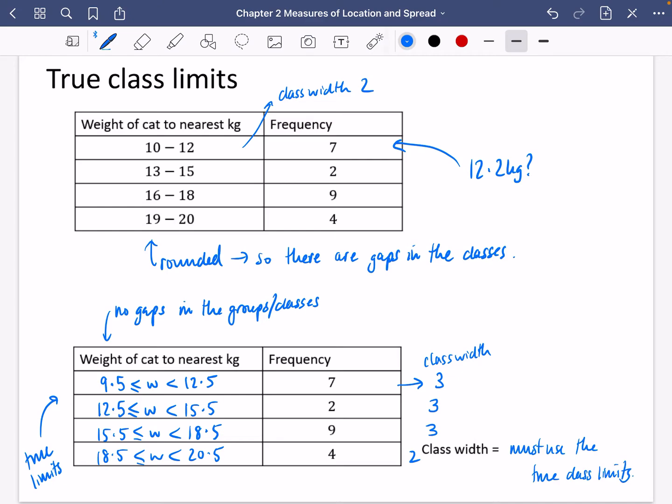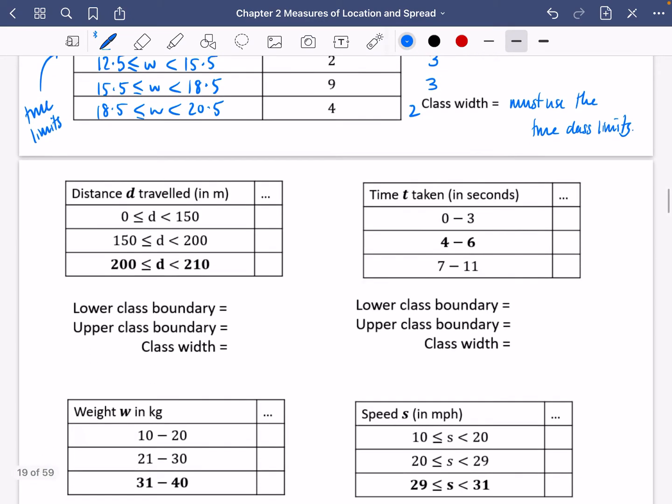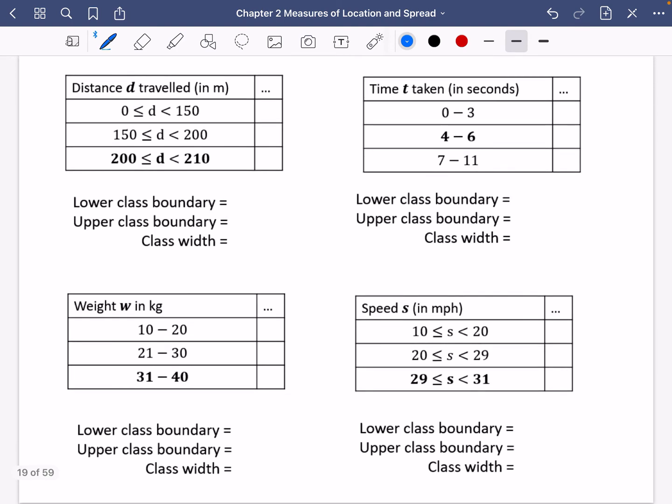Let's have a look at these true class limits with some examples that we've got here. So for the ones in bold, what I want you to do is to decide what is the true lower class boundary of this one that we've got? What is the upper class boundary? And what is the class width? Now, if they're presented in this kind of way, there's no gaps. So this is already in its true class limits form. We don't really need to do that much work. But there are a couple of them where I think maybe you're going to need to actually do some adjustments. So pause the video for the ones in bold. See if you can answer these questions. And then I'm going to go through them in just a moment.